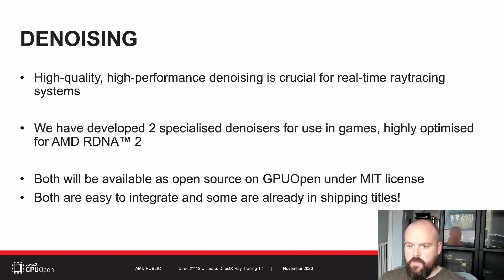Use of a high quality, high performance denoiser is crucial for real-time ray tracing with practical application in games. To help with that, we developed two specialized denoisers for use in games, both highly optimized for the RDNA 2 microarchitecture. The first is specialized for ray traced reflections and the second is designed for ray traced shadows. Both denoisers are available under early access and will be open sourced on GPUOpen under the MIT license. We designed both to be easy to integrate and have already been working with multiple game partners with great results. Here's a look at the shadow denoiser in action in gameplay footage captured from Dirt 5.